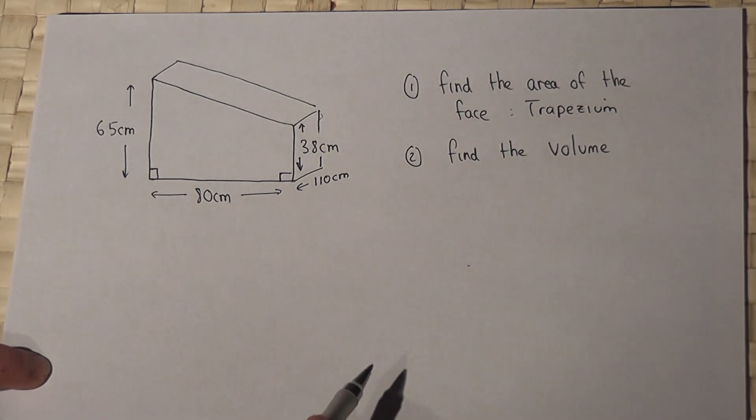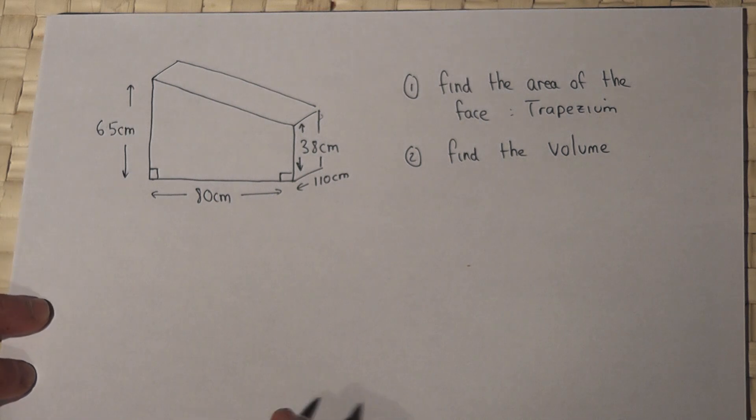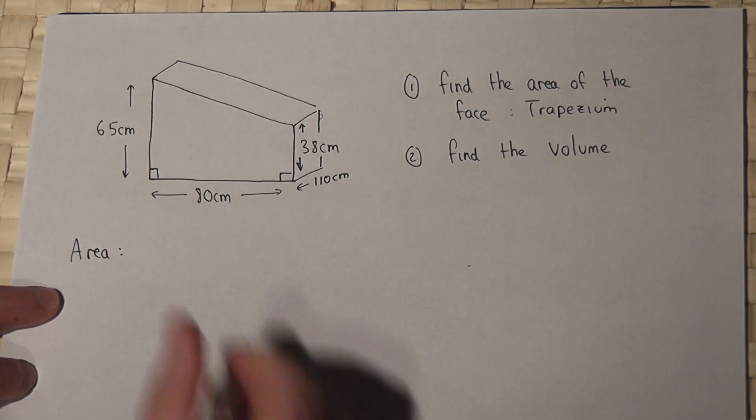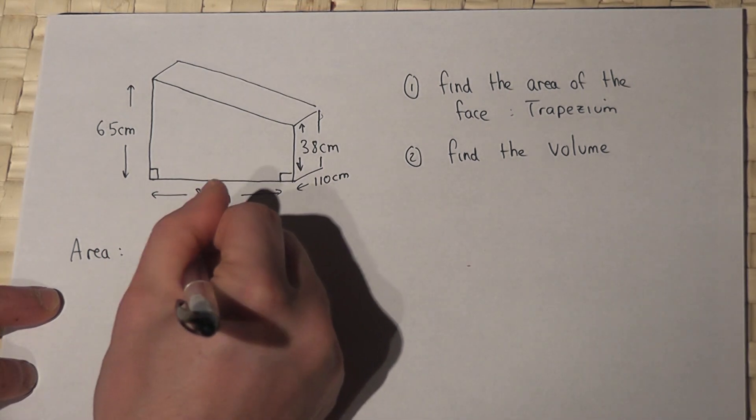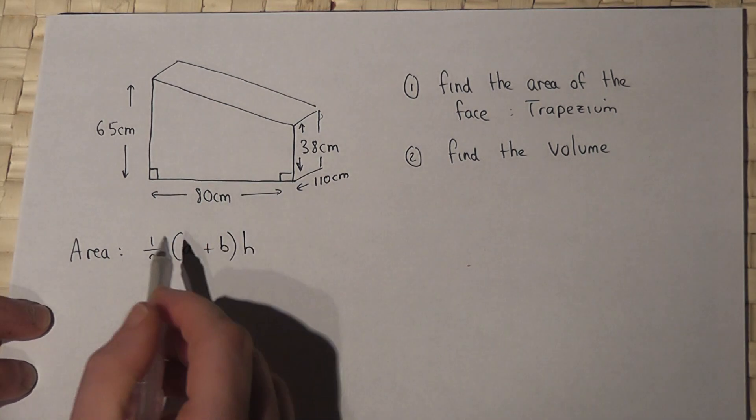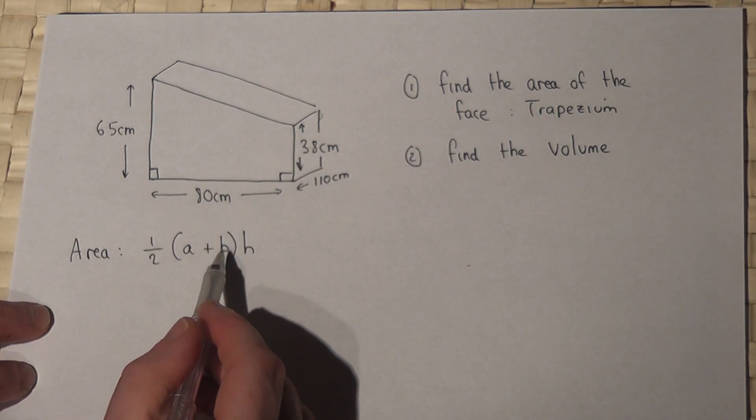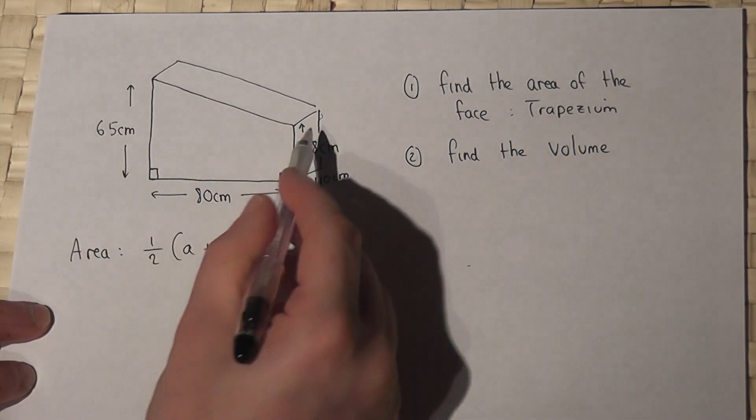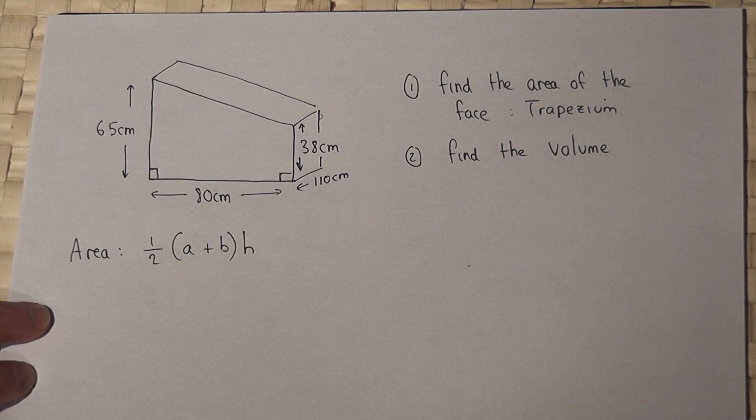To find the area of a trapezium, there's quite an important formula to be aware of, which is as follows. The area of a trapezium is a half, A plus B times by H, where A and B are the two parallel sides, and H is the distance between the two parallel sides.